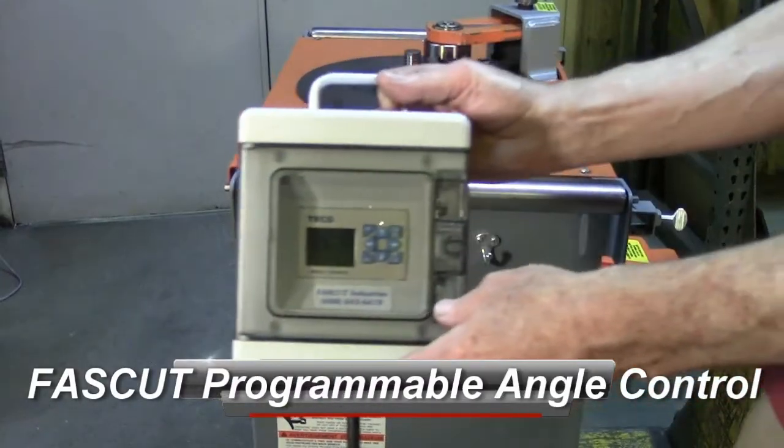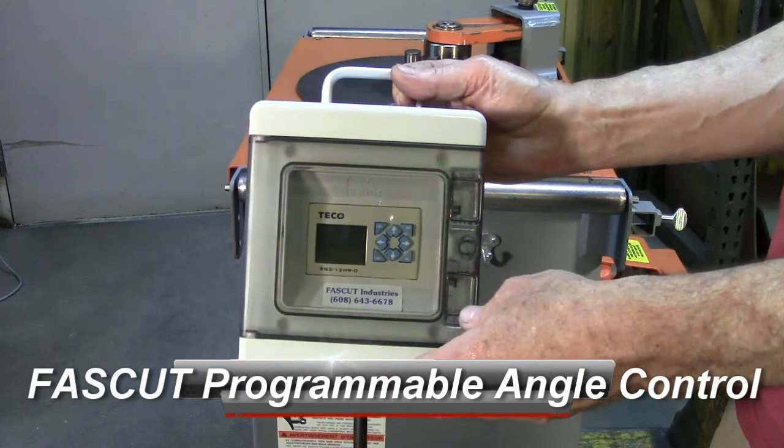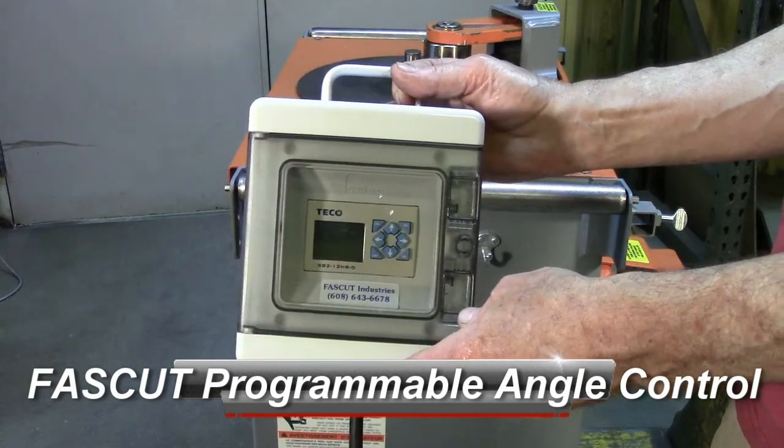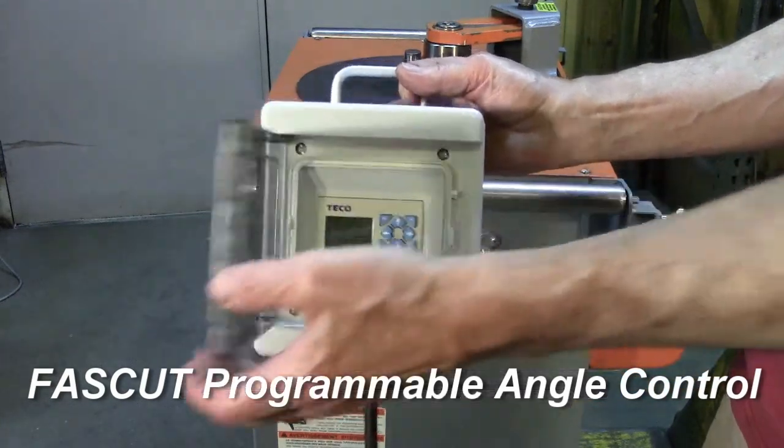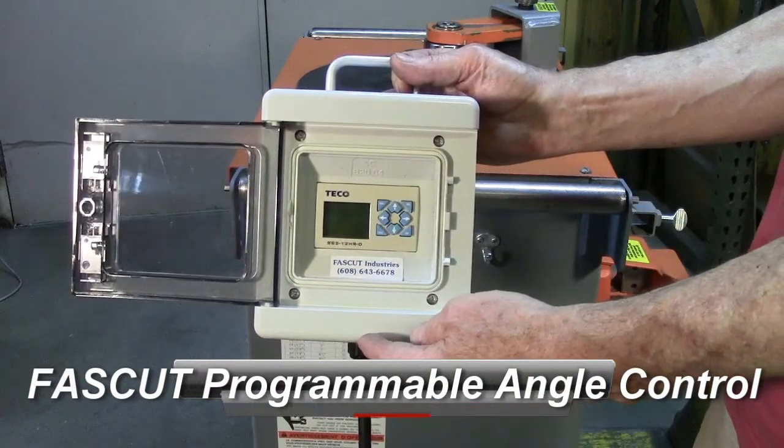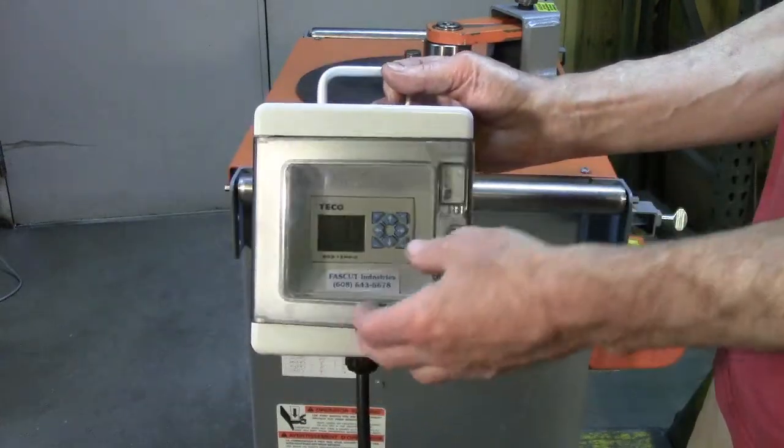A programmable angle control can be added as an option when you purchase the FastCut model FR800 Bender, FR800C Bender Cutter Combo, or the FRH850 Bender.